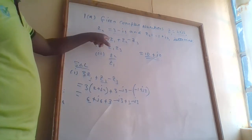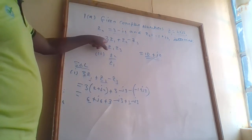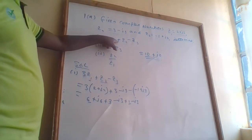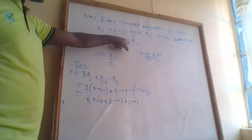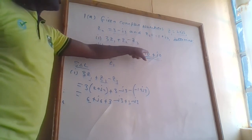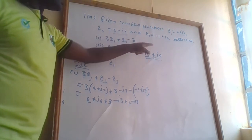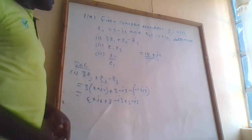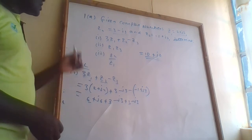So when we evaluate 3Z1 plus Z2 minus Z3, we get 10 plus j0.